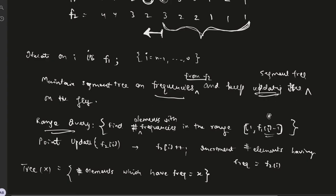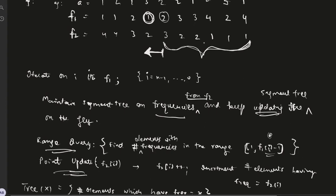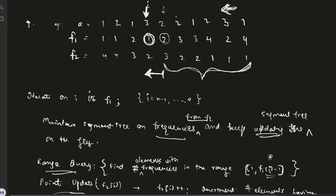The other operation is point update. That is the updation of the segment tree which takes place when we traverse from right to left. Once we've answered the query we will perform a point update which basically does f2i plus plus - that is incrementing the frequency of f2i. For example, if we were at this index, we would have queried first, gotten the answer 3, and then we would have updated.